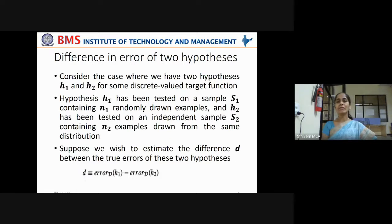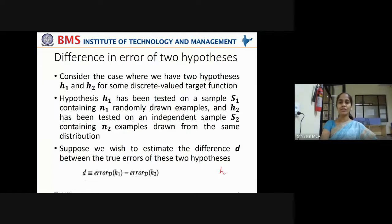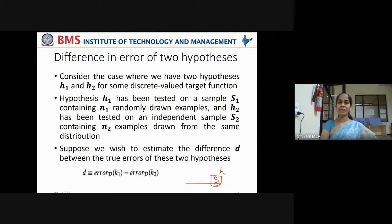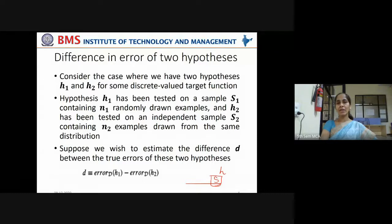Consider the case where we have two hypotheses H1 and H2 for some discrete value target function. So far, we have seen only hypothesis H, which is derived by training a machine learning model on a set of training examples S. H is like a machine learning model — it tells us about the performance of a machine learning model. Say, if the model gives 95% accuracy, then our hypothesis is: the machine learning model performs with 95% accuracy and 5% error rate.